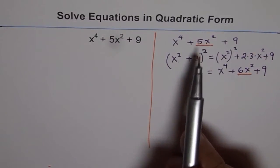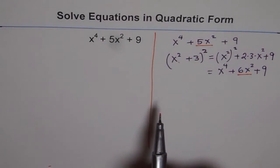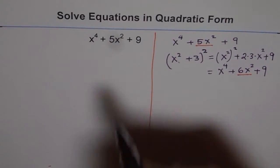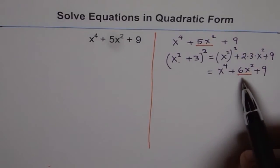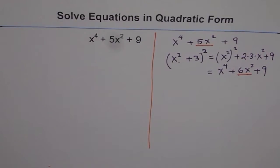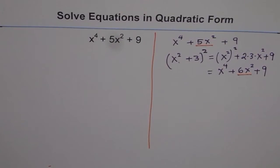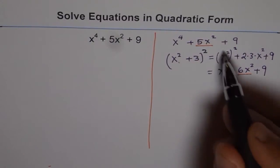If, instead of 5x squared, we had 6x squared, we could have written it like this. But we don't have 6x squared. What we can do is, we can always add and subtract the same term. So the strategy here is: we need one extra x squared. We will add and subtract one extra x squared.